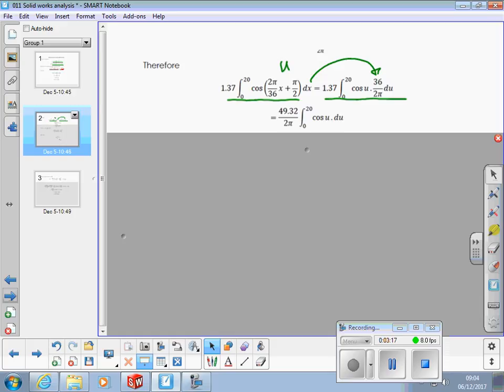So, then, take the constant here outside, so I've multiplied 36 by 1.37 on the top, 2 pi underneath, so take the constant out. So, the integral of cos u is sine u between 20 and 0, 49.32 over 2 pi outside the integral. All right?